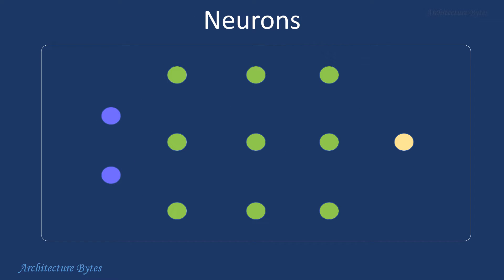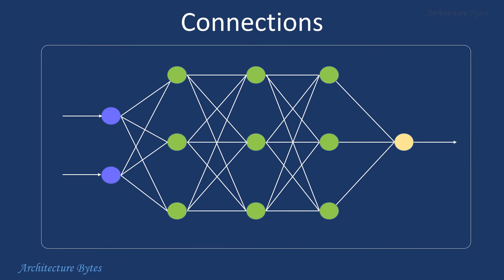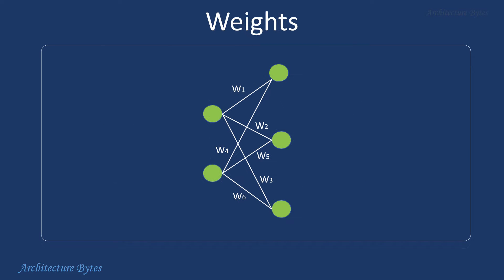Neurons are the basic building blocks of a neural network. You can think of them as mathematical functions that process input data and produce an output. They are connected to other neurons through connections. Each connection has an associated weight that determines the strength of the connection. During training, these weights are adjusted to optimize the network's performance.